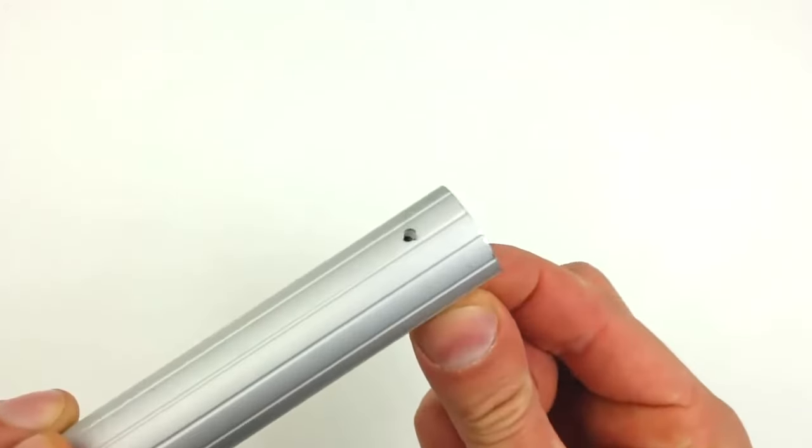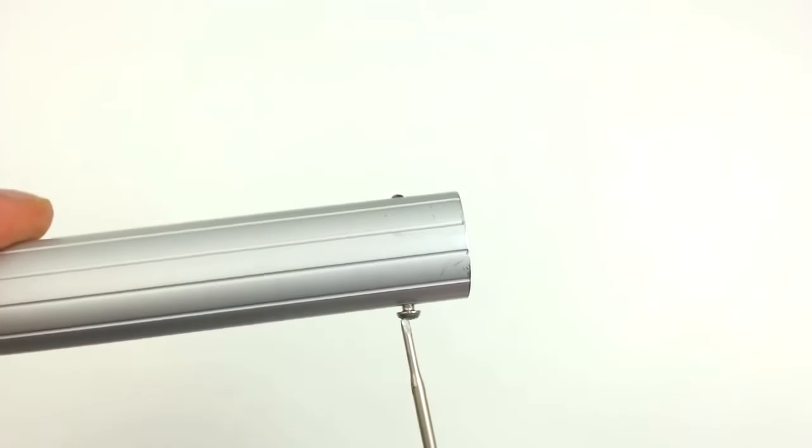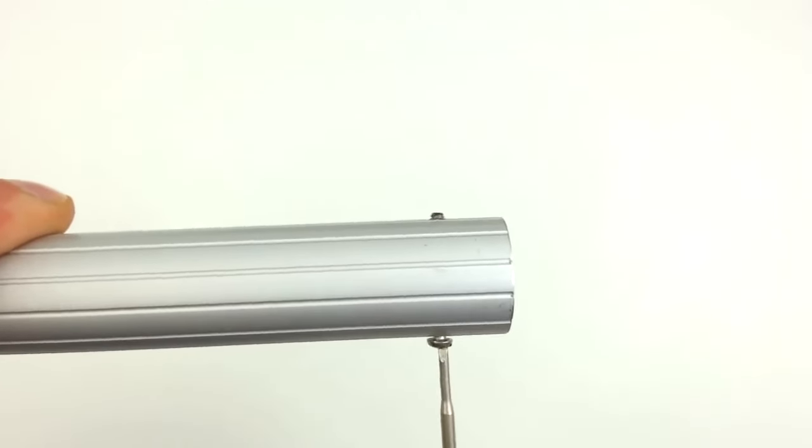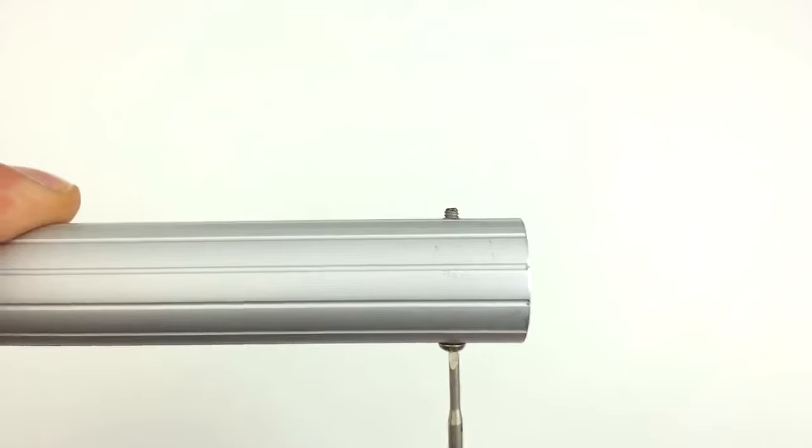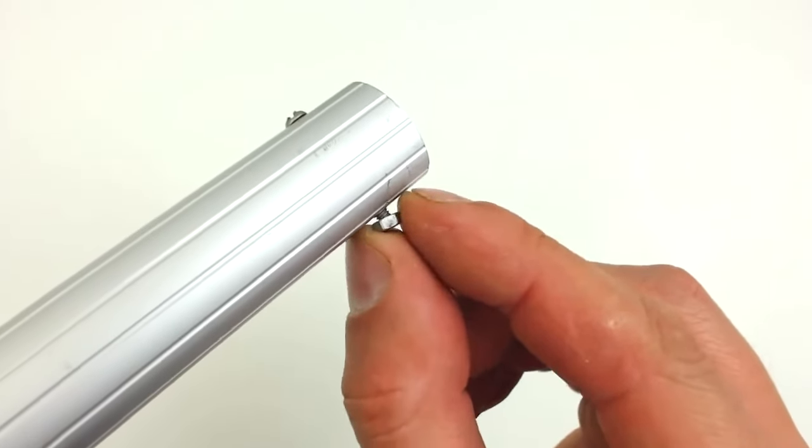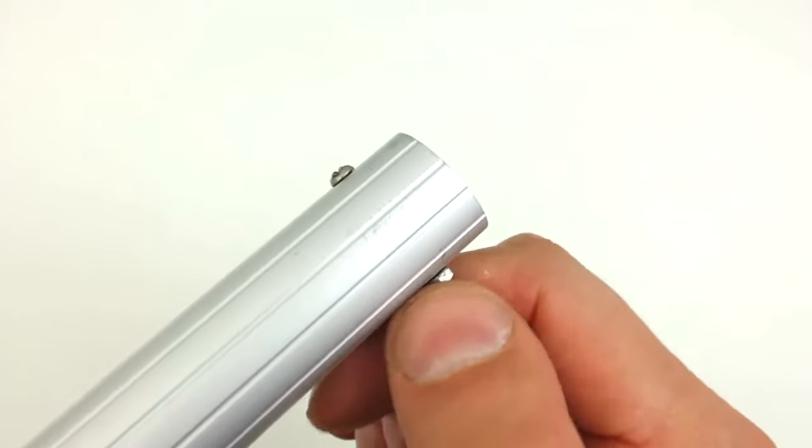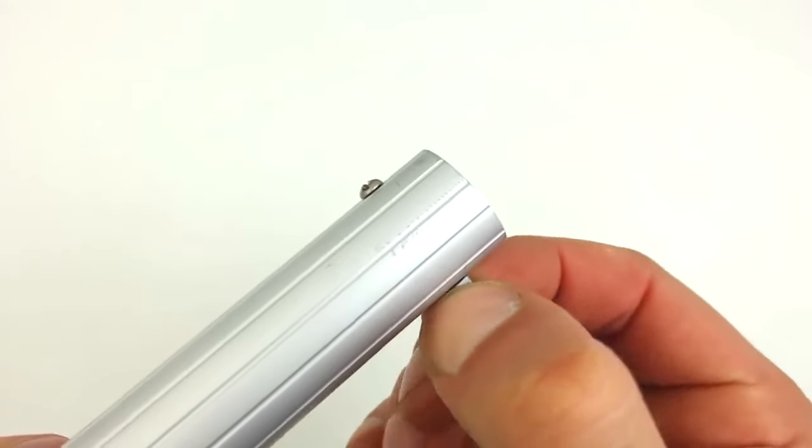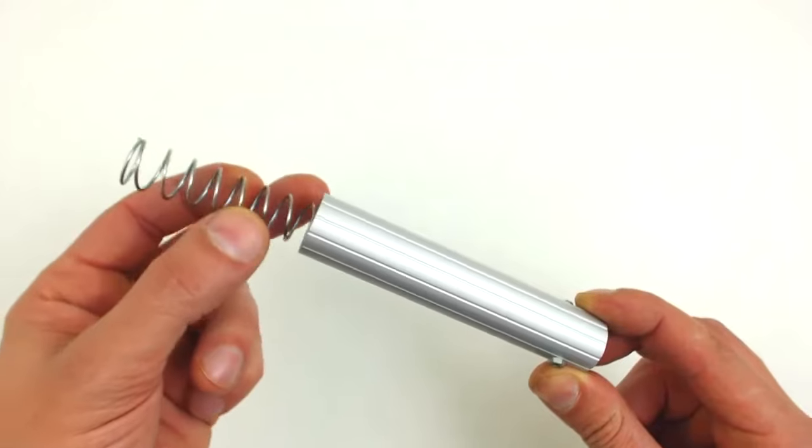We need a long screw that not only crosses over from one side to the other, but enough to thread a nut. This will serve as a stopper for the spring that will propel the piece that we will put inside.